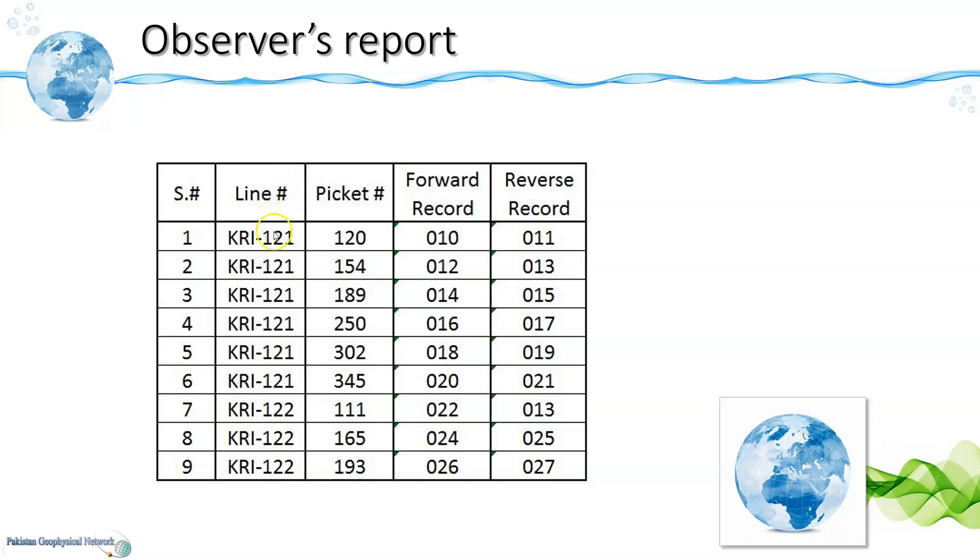As we can see our first line is KRI-121 and we have forward reverse shooting done on picket 120. Let's suppose our file record numbers are starting from 010 so our forward record file would be 010 and our reverse record file will be 011.